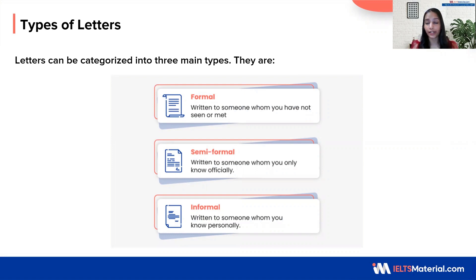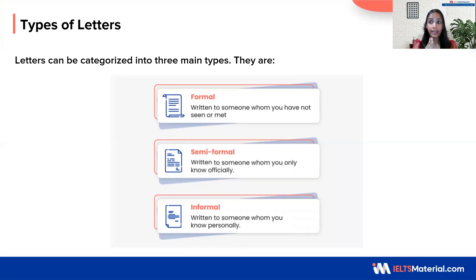Now let's start with the formal letter. You write it to someone whom you have not seen or met. You do not know them by the first or last name. Usually, it is addressed to a private or public institution. For example, it could be the editor of a newspaper or municipal counsellor. Next, let's have a look at semi-formal letter. You write it to someone whom you know officially. You know them by their first or last name. They are not your friends, yet there is some kind of official relationship.